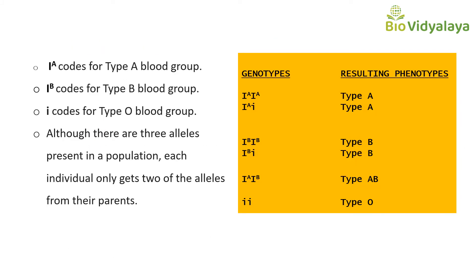The I^A allele codes for the A molecule or A antigen on the red blood cells. The I^B allele codes for the B molecule or B antigen on the surface of red blood cells. The small i allele codes for no molecule — that means there is no antigen on the red blood cells. The allele I^A codes for type A blood group, I^B codes for type B blood group, and small i codes for type O blood group. Small i is the recessive allele coding for O blood group. No matter how many alleles for a given gene are present in a population, a diploid individual will only have two alleles.